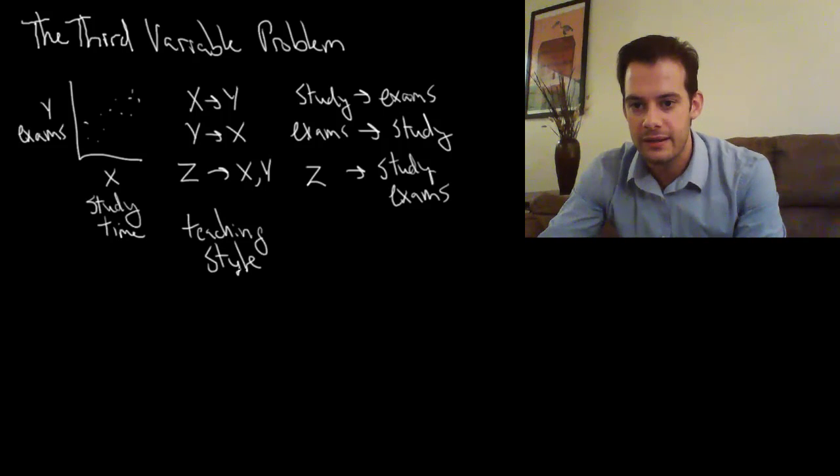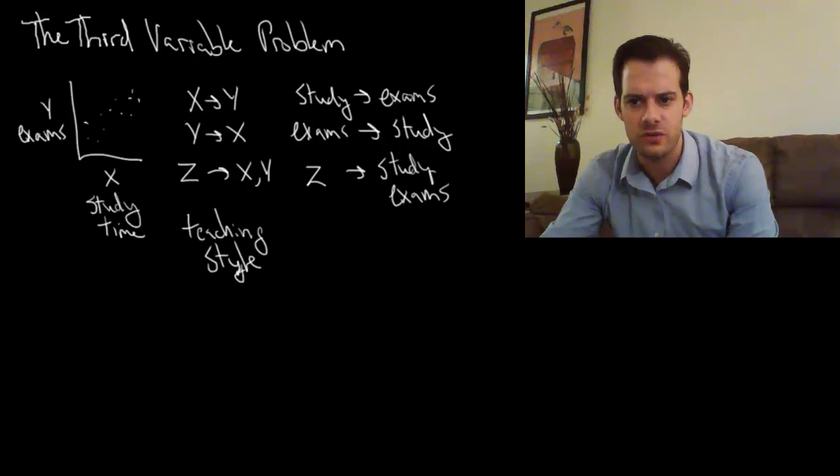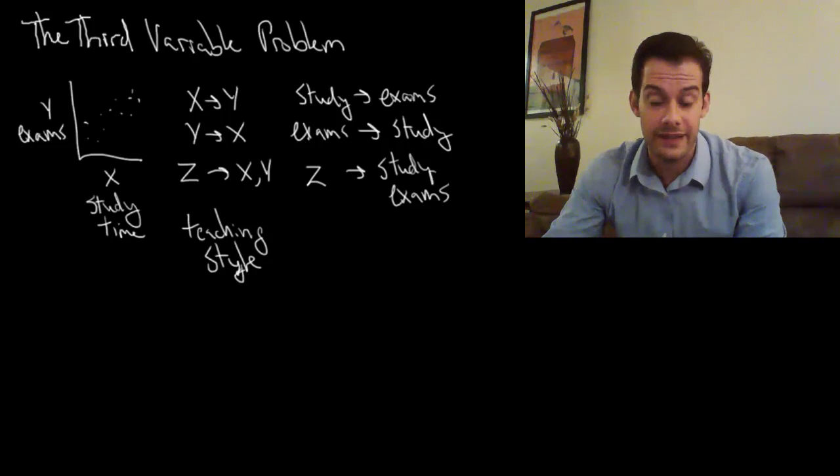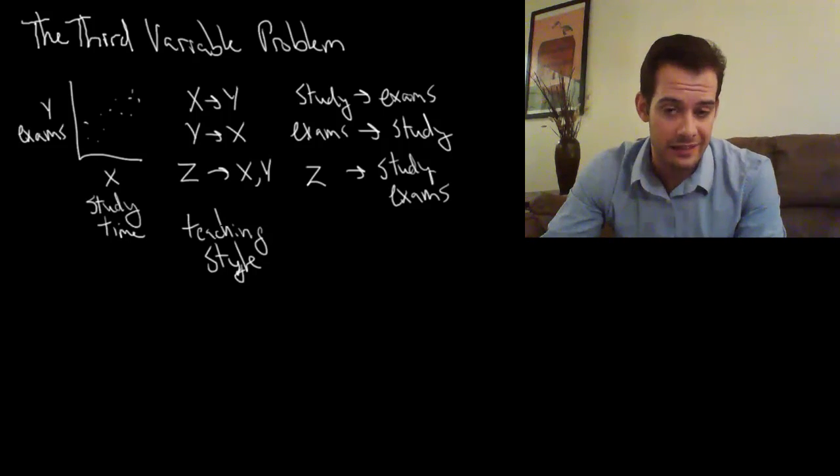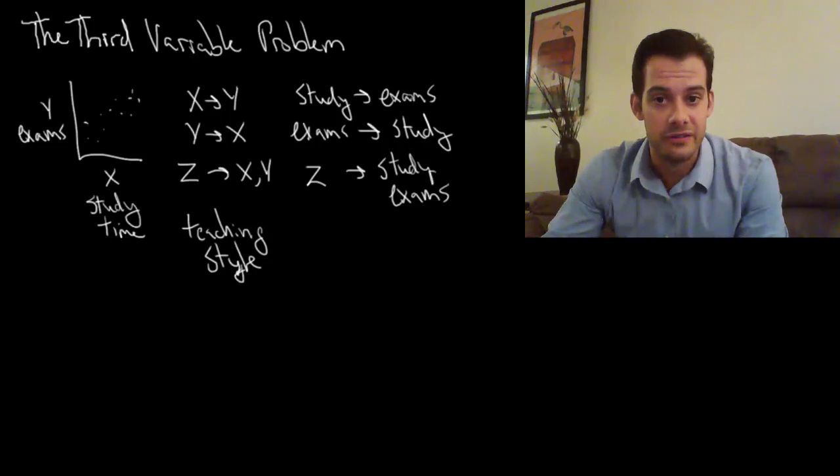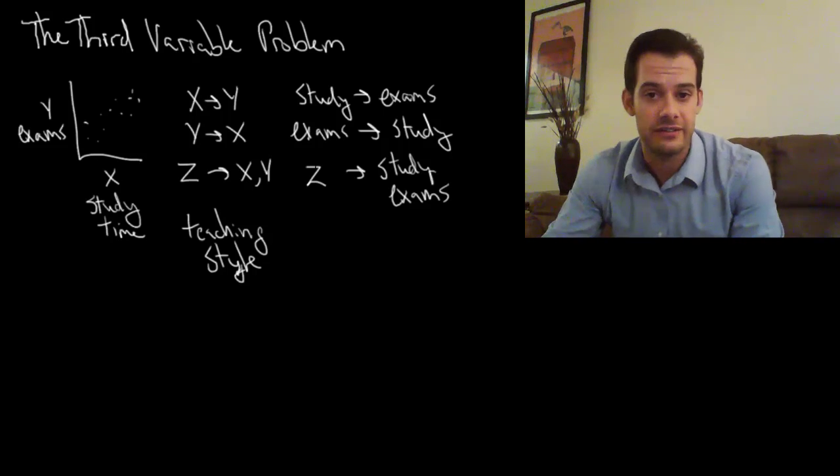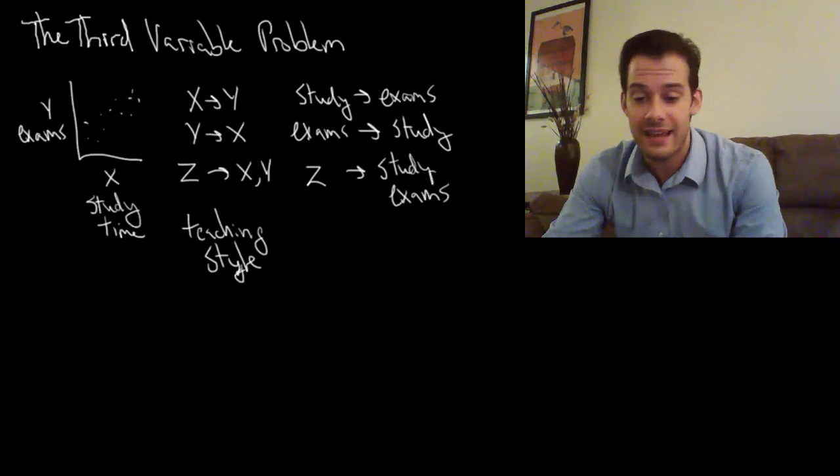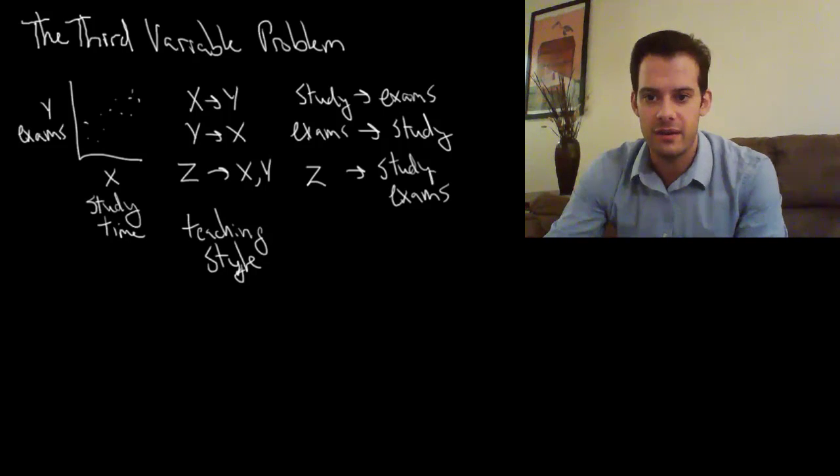We could say a potential z that could be influencing this data would be teaching style. So it could be the case that students who have a teacher that they really like, they study more because they enjoy the class more. And then also they do better on their exams. They learn more because they like the teaching style. So it makes sense to them and they do better on the tests. That's one possible third variable that could influence this data.